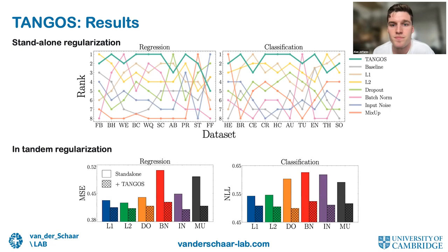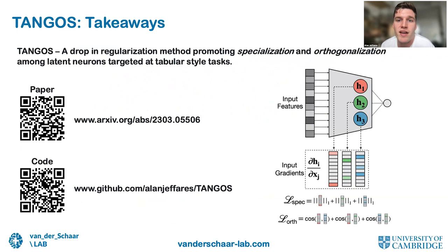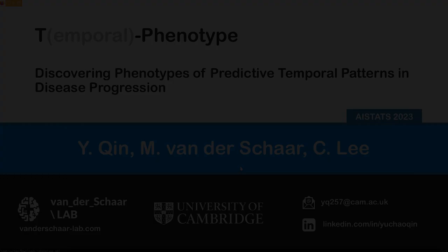A ranking plot demonstrates that TANGOS generally ranks highly compared to other regularizers. In practice we typically use multiple regularizers in tandem, so we also evaluate the improvement when TANGOS is paired with each baseline method. Consistently, pairing any regularization method with TANGOS provides an additional boost in performance. TANGOS is a drop-in regularization method promoting specialization and orthogonalization among latent neurons, specifically targeted at tabular-style tasks. Check out the paper and code on GitHub to integrate TANGOS into your own work.